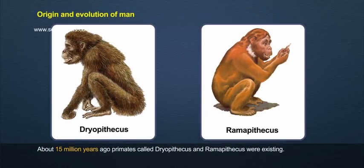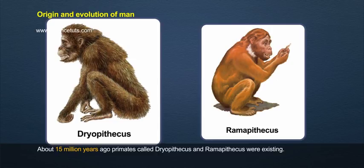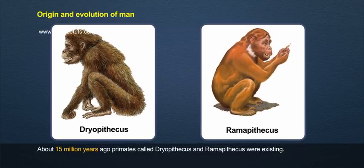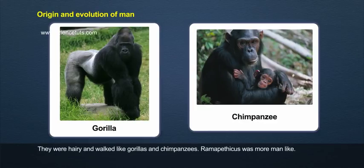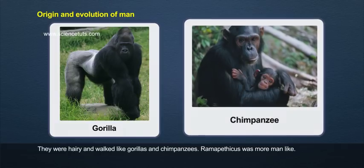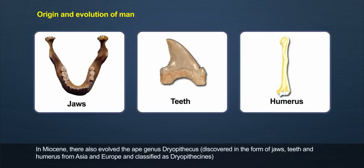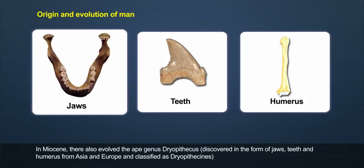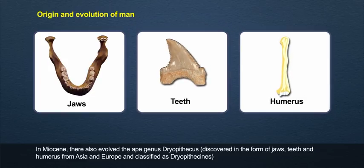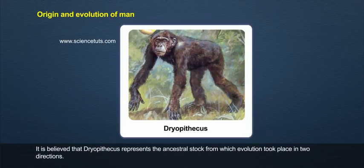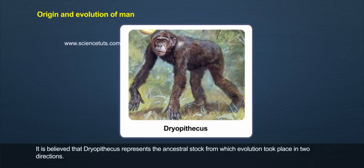About 15 million years ago, primates called Dryopithecus and Ramapithecus were existing. They were hairy and walked like gorillas and chimpanzees. Ramapithecus was more manlike. In the Miocene, they also evolved the ape genus Dryopithecus, discovered in the form of jaws, teeth, and humerus from Asia and Europe and classified as Dryopithecines. It is believed that Dryopithecus represents the ancestral stalk from which evolution took place in two directions.